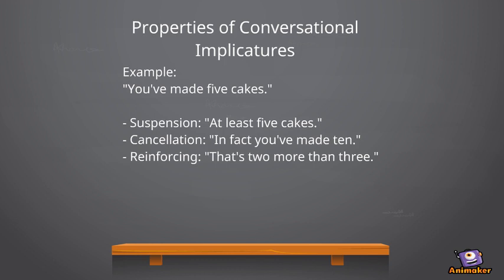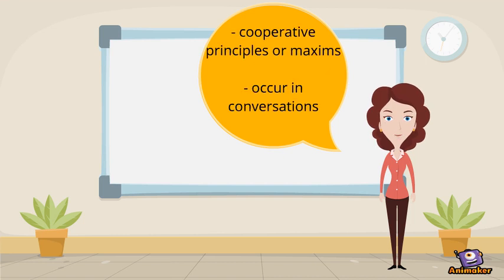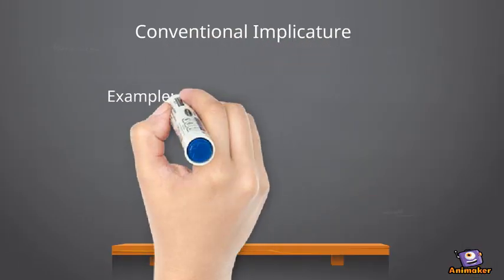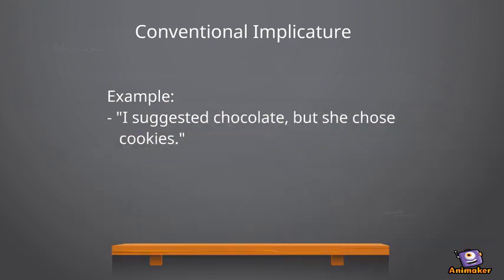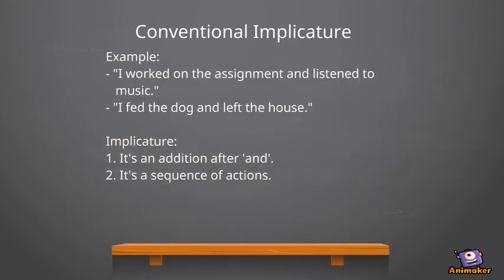Last but not least, let's talk about conventional implicatures. These aren't based on cooperative principles or maxims and they don't have to occur in conversations. Their interpretation doesn't depend on a special context, unlike the generalized conversational implicature. The contrast is created by using a specific word: 'but.' There's always an association with specific words that convey additional meaning. The difference between two statements is that in the first sentence, 'and' indicates addition — I worked on the assignment while I listened to music. Whereas in the second sentence, it is a sequence of actions: I fed the dog and after that I left the house. The word 'and' can be an addition or indicate a sequence.